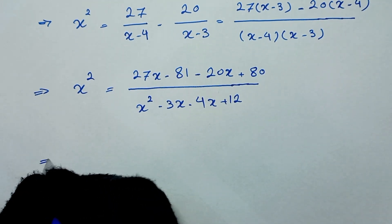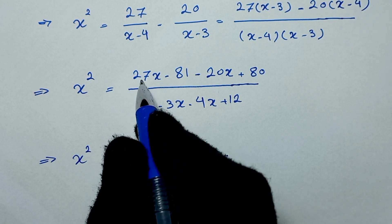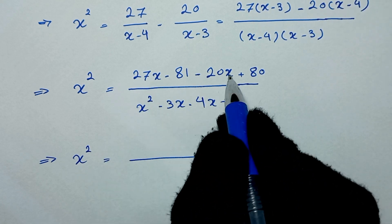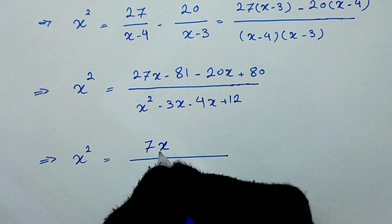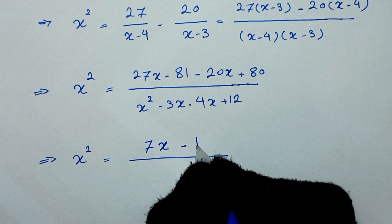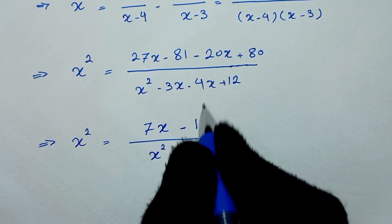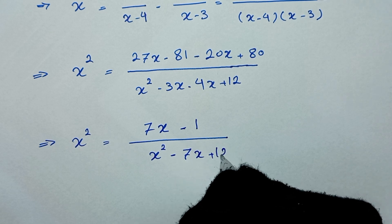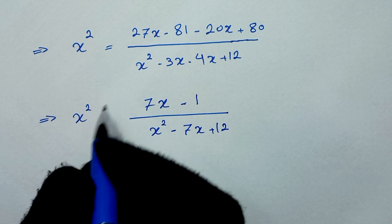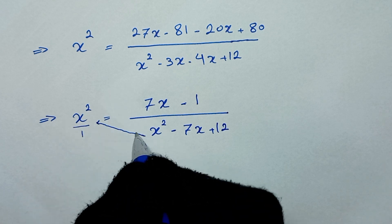Combining terms in the numerator: 27x minus 20x is 7x, and negative 81 plus 80 is negative 1. So the numerator becomes negative 7x minus 1, wait — we have x squared is equal to the fraction with numerator x squared minus 7x plus 12 in the denominator.